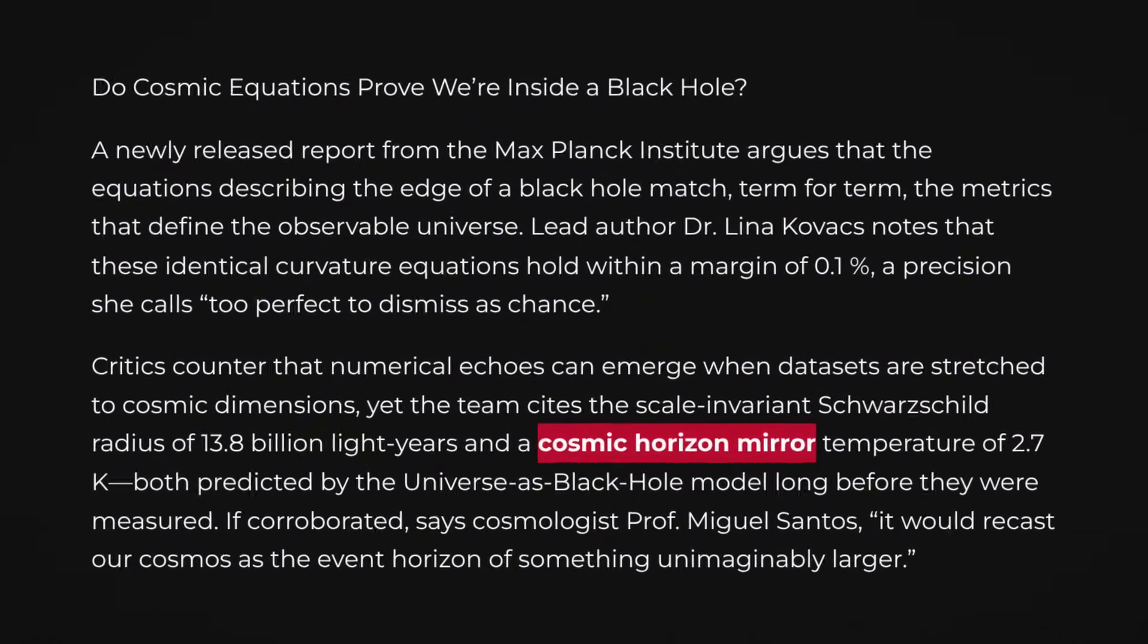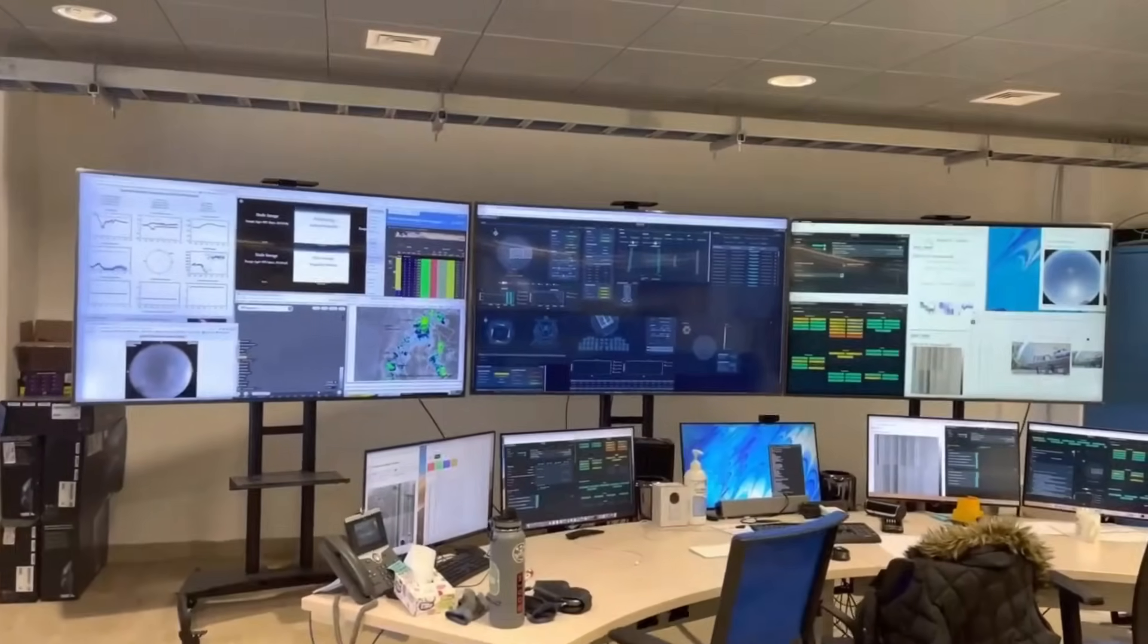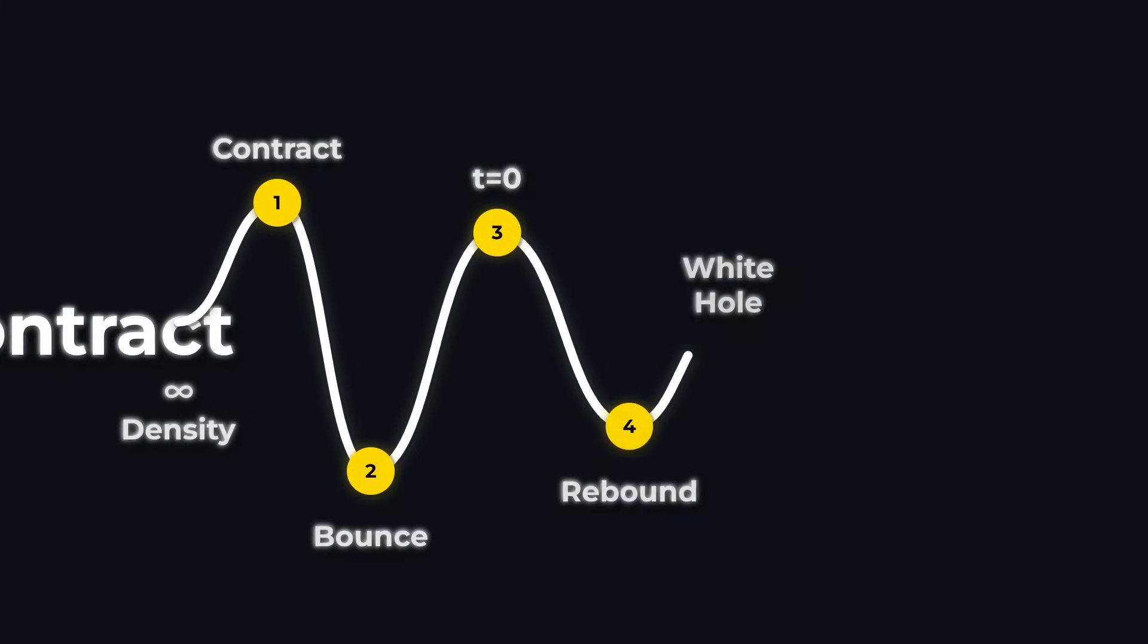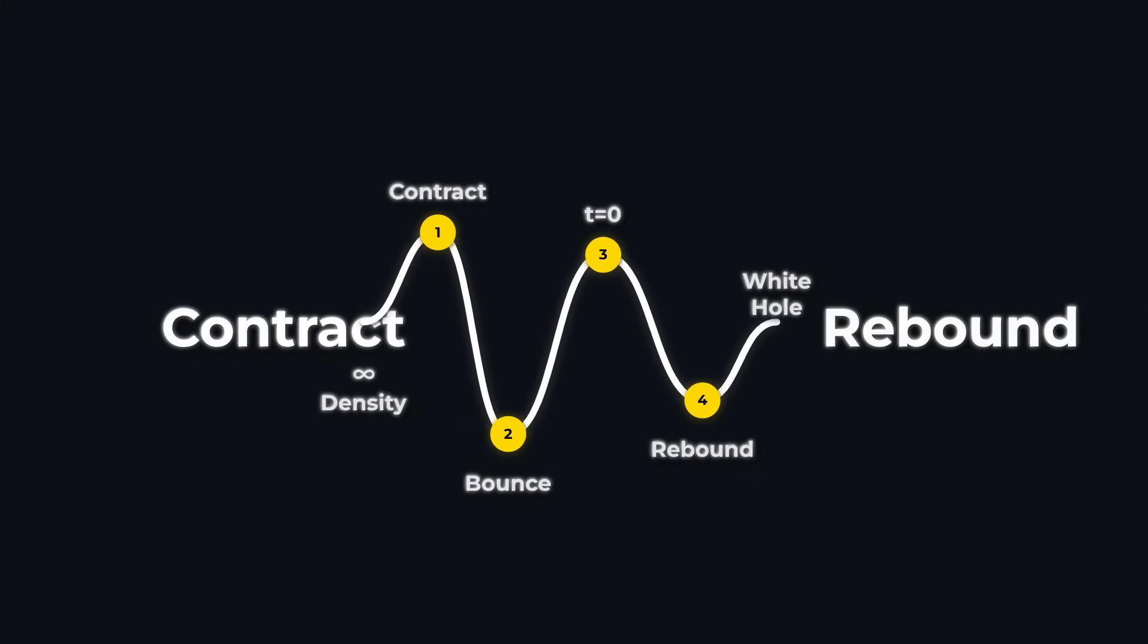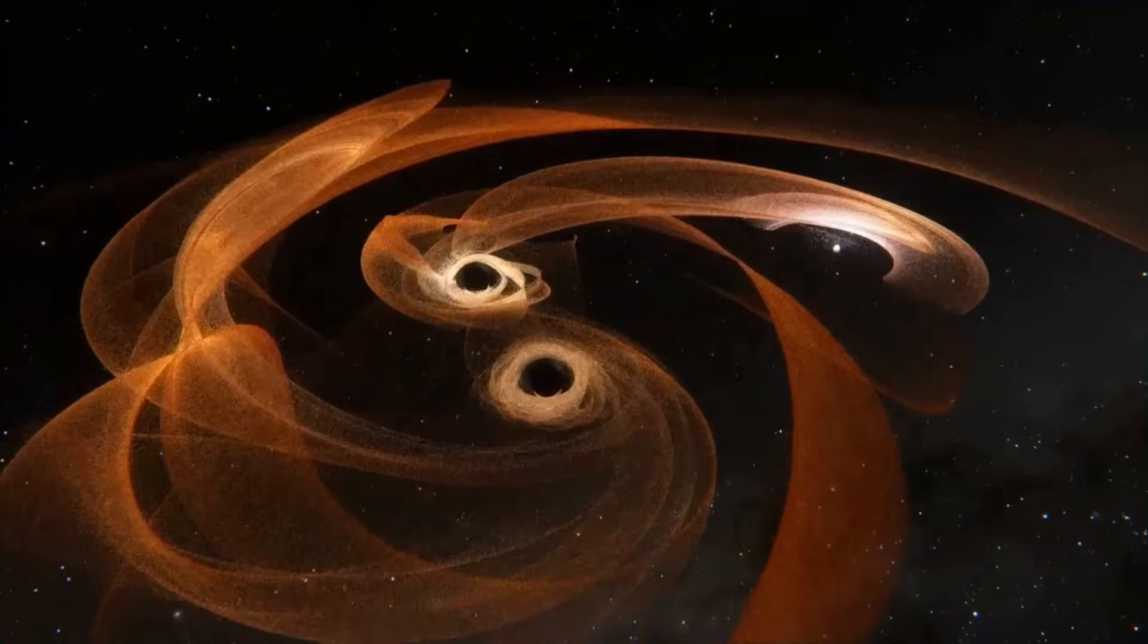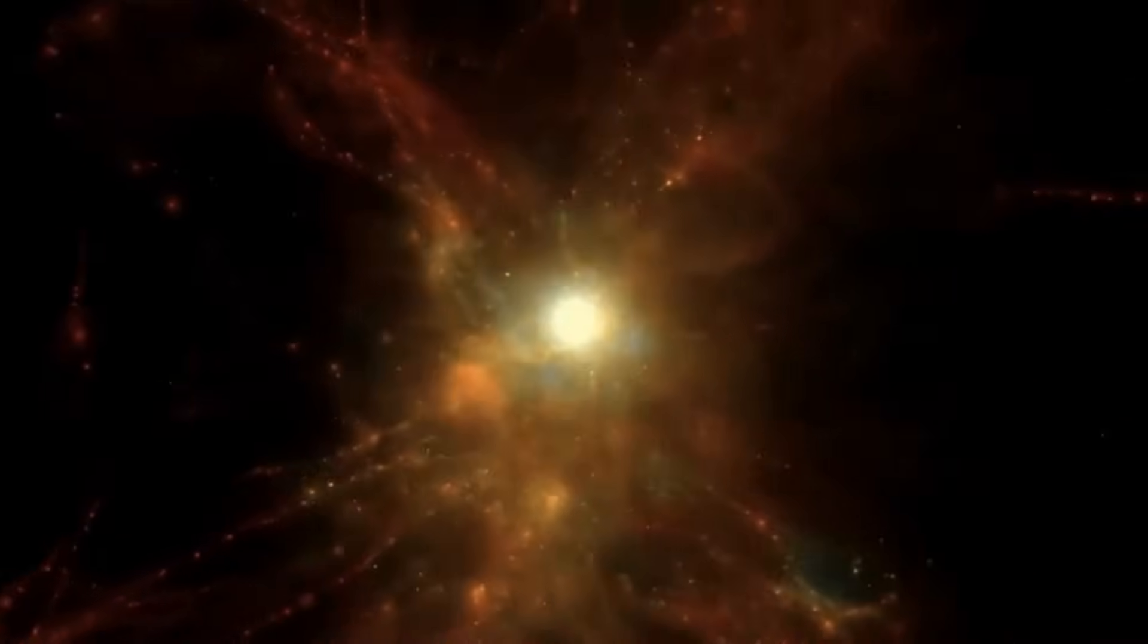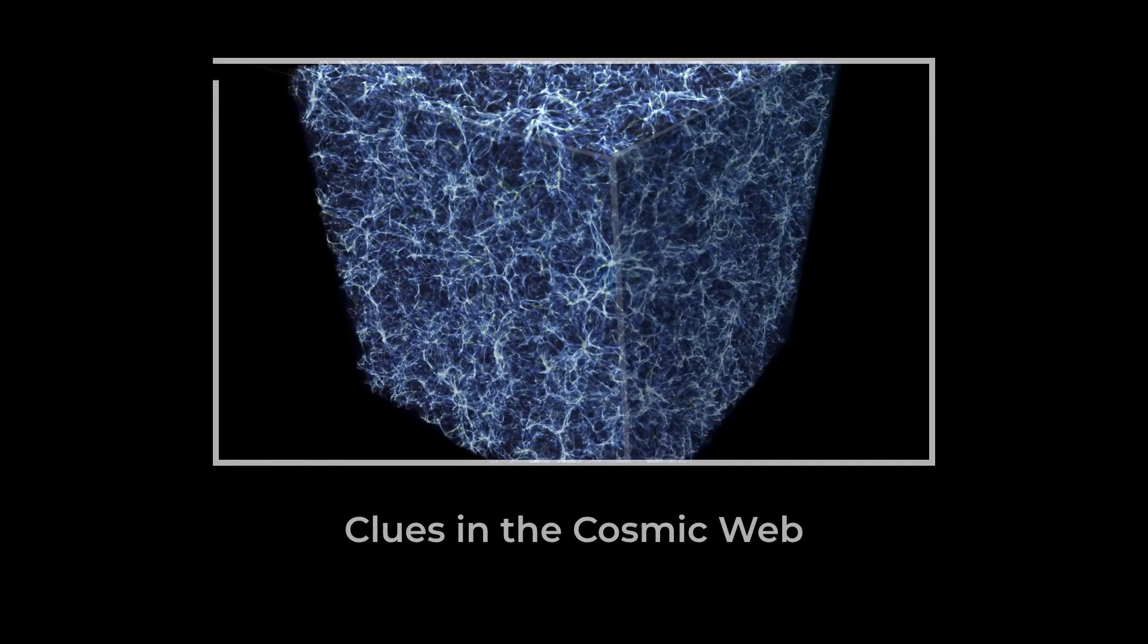Physicists have long debated whether these similarities are just mathematical coincidences, or hints at something deeper. Some propose that the universe's beginning wasn't a singularity at all, but a kind of rebound. A white hole, the time-reverse twin of a black hole, blasting matter outward instead of sucking it in. Others point out that if the universe did inherit its spin from a parent black hole, we might expect to see traces of that rotation imprinted on the largest structures we can observe.